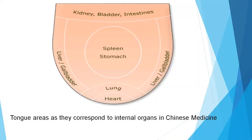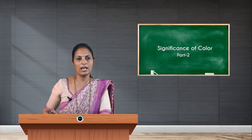In this picture we can see the representation of different organs at different areas of the tongue. The tip of the tongue is represented by the lung and heart. On either side — medially and laterally — we see the area represented by the liver and gallbladder. Just behind the lung and heart area is the representation of the spleen and stomach, and at the base we see the kidney, urinary bladder, and intestines.